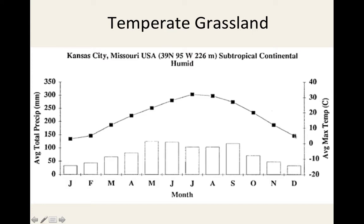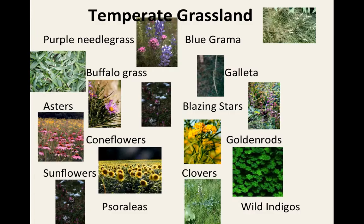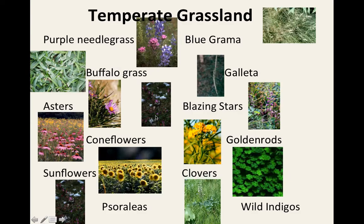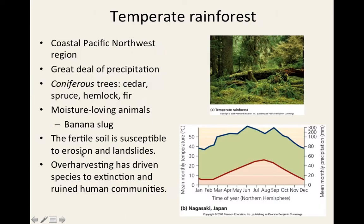The climatograph of a temperate grassland shows bar graphs for precipitation and a line graph for temperature ranges. You'll find perennial flowers like goldenrod, which is extracted for medicinal use, and purple coneflower — also called echinacea — which is used to boost the immune system.